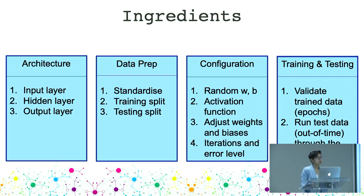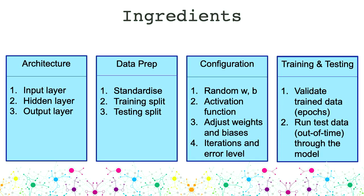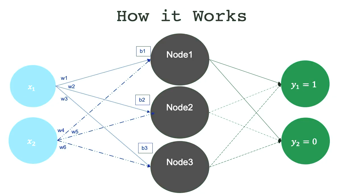The typical ingredients you would need for a neural net - this applies to any machine or deep learning model. You need to have a network architecture: the input, the hidden layer, and the output layer. Then you're going to prepare your data, standardize it, create the training and test splits. Then you're going to move on to the configuration. You're going to randomly assign weights and biases - it really doesn't matter what you set them as, they're going to be adjusted later. Then you're going to choose an activation function, maybe a sigmoid, maybe something else. Then you're going to adjust the weights and biases through backpropagation and iterate until you get to the desired error level. When you get to the actual training and testing and validation, you're going to run that through the untrained data, your test data, and then see how well your model did.